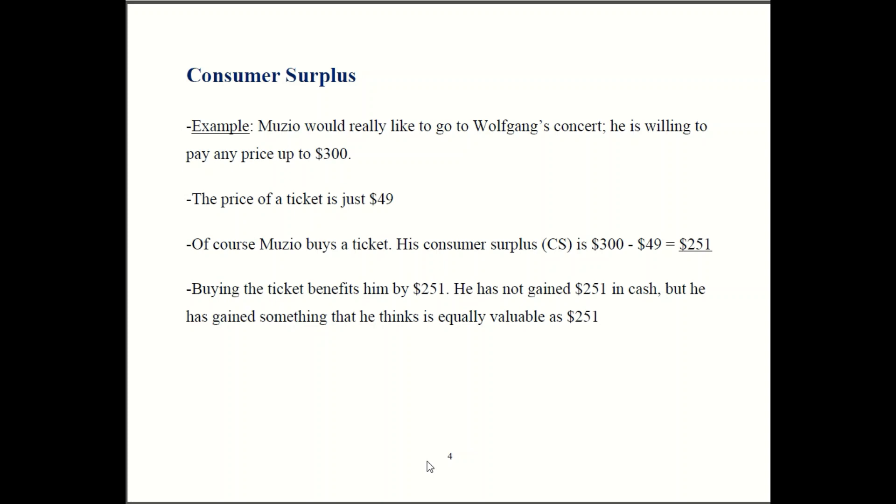Let's say we have Museo and he wants to go to Wolfgang's concert. Another slide that is clearly written before COVID and people still had live concerts. Let's say Museo is really really excited about Wolfgang's concert. He's so excited he thinks it's worth $300 to go to Wolfgang's concert. Wolfgang though is only charging folks $49. So Museo thinks these concert tickets are a really good deal. So he buys it. He spends $49 on a ticket that in his eyes is worth $300.